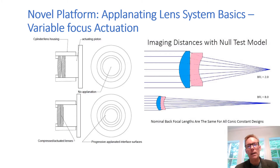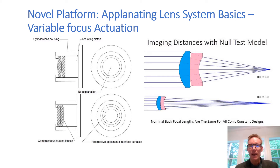The lens uses a novel technology to change optical power, setting it apart from other lens technologies. Instead of adding power to the lens, it subtracts power from the lens. Simply stated, it utilizes two or more compressible lenses which, when actuated, progressively reduce the power of the lens system at the applanating interface. Basically, you are pushing the two lenses together, taking the lens power away at the interface and bringing it to zero.